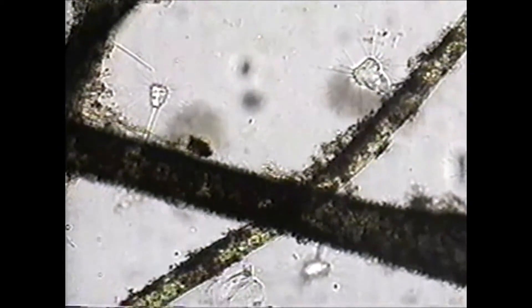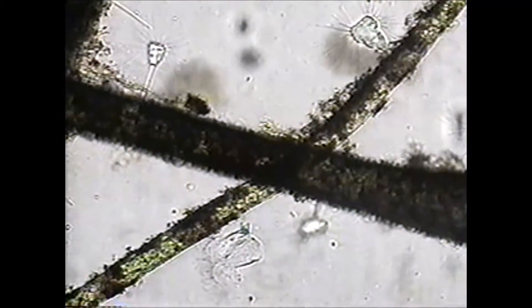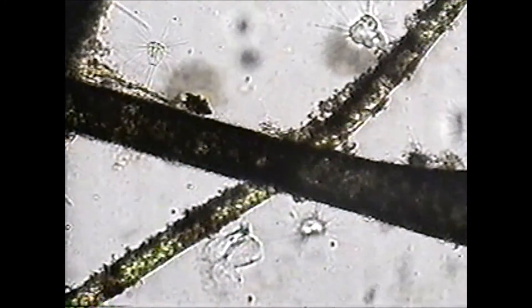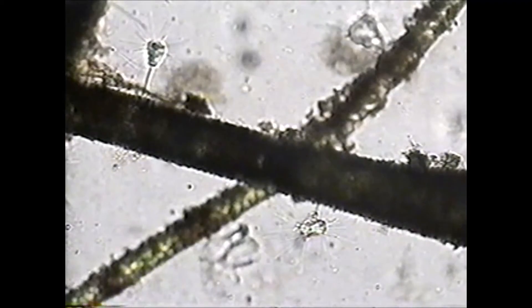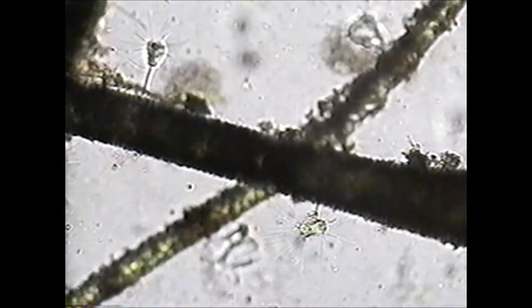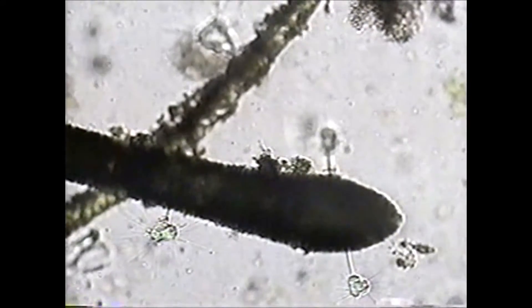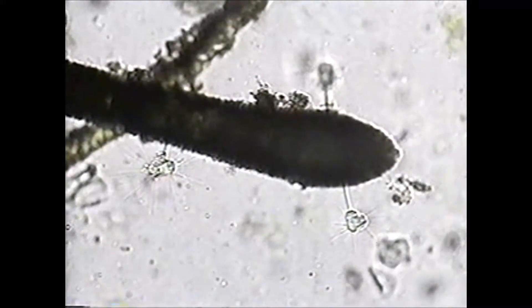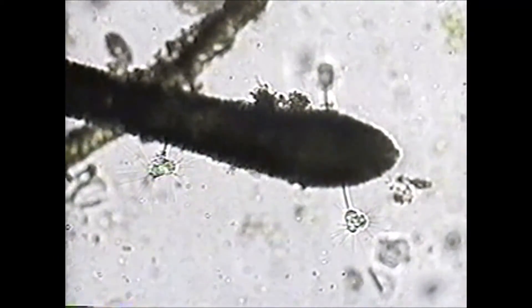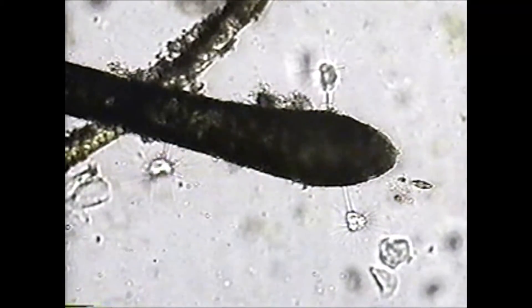Suctorians, a ciliate protozoan. The adults, however, have no cilia or cytostome. They do have a non-contractile stock used to attach to the substrate. Suctorians have no mouth.